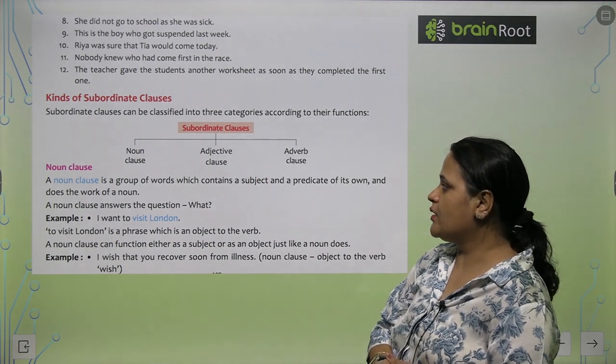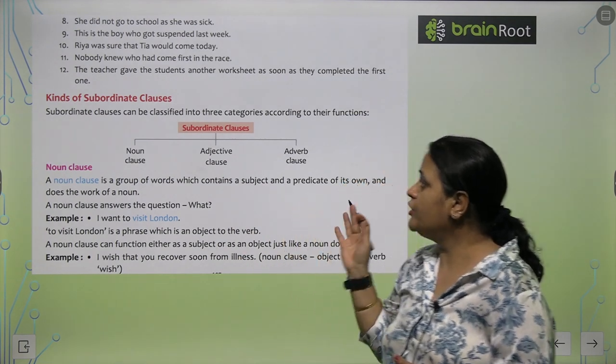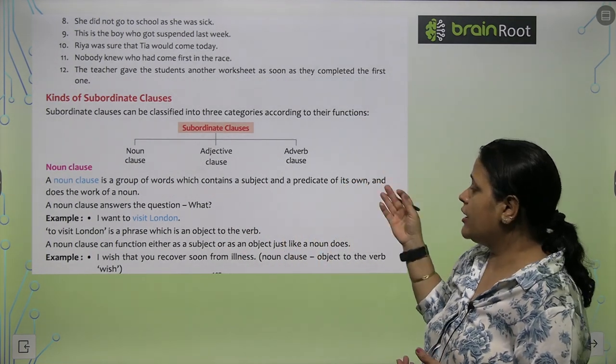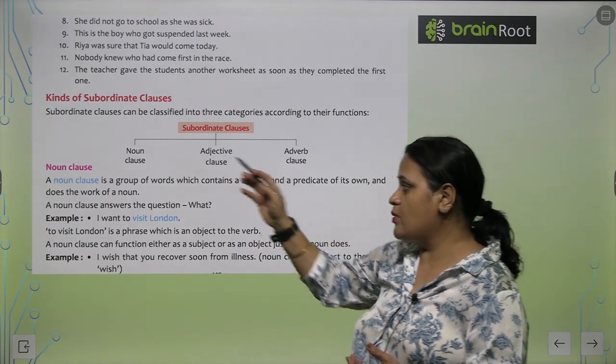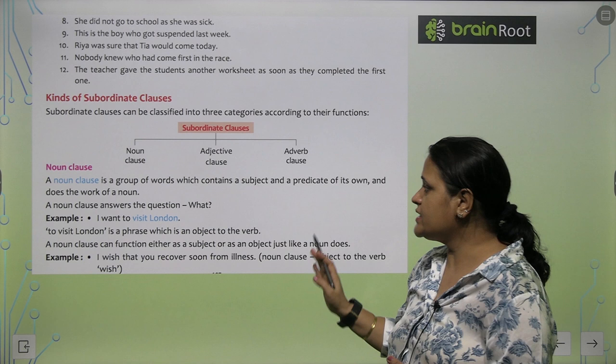So, now kind of subordinate clause. Subordinate clauses can be classified into three categories according to their functions. Noun clause, adjective clause, adverb clause. Noun clause kia kata hai?